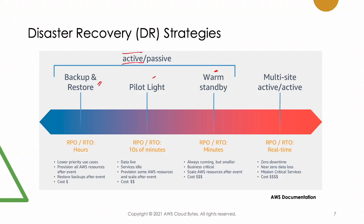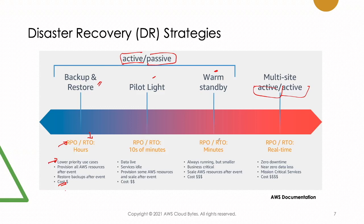In active-passive, your production side is active and your disaster recovery side is passive. In multi-site active-active, both production and DR are active. For backup and restore, the lower cost comes with higher RTO and potential data loss between backup and disaster. If this strategy doesn't suit your RPO, you should consider pilot light, warm standby, or active-active. Backup and restore may take hours to restore.